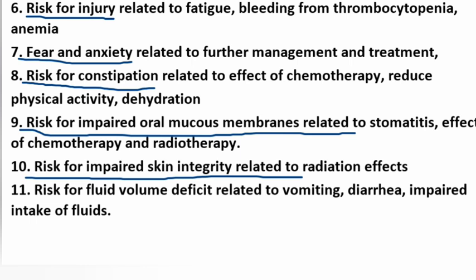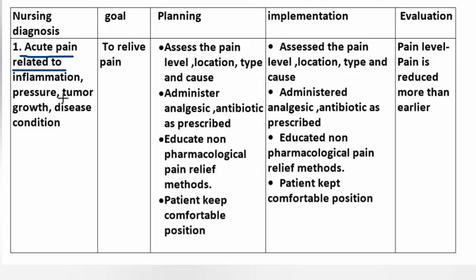Number 11 - Risk for fluid volume deficit related to vomiting, diarrhea, and impaired intake of fluid. Disease condition. Goal: to relieve pain. Planning: assess the pain level, location, type, and cause.